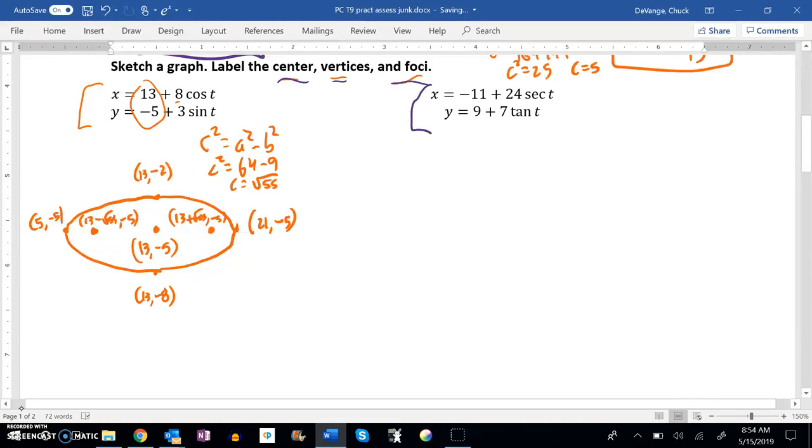I notice this is secant and tangent. So this is going to be a hyperbola because I know that secant squared minus tangent squared is 1. And knowing that, since secant is associated with x...